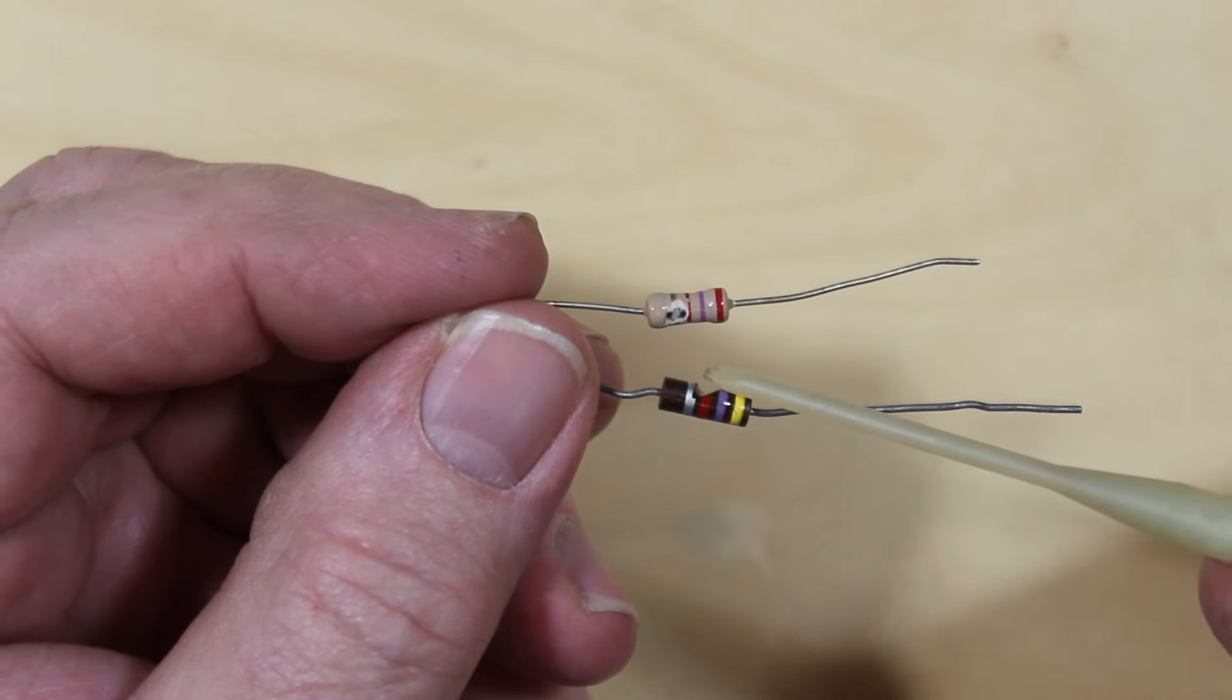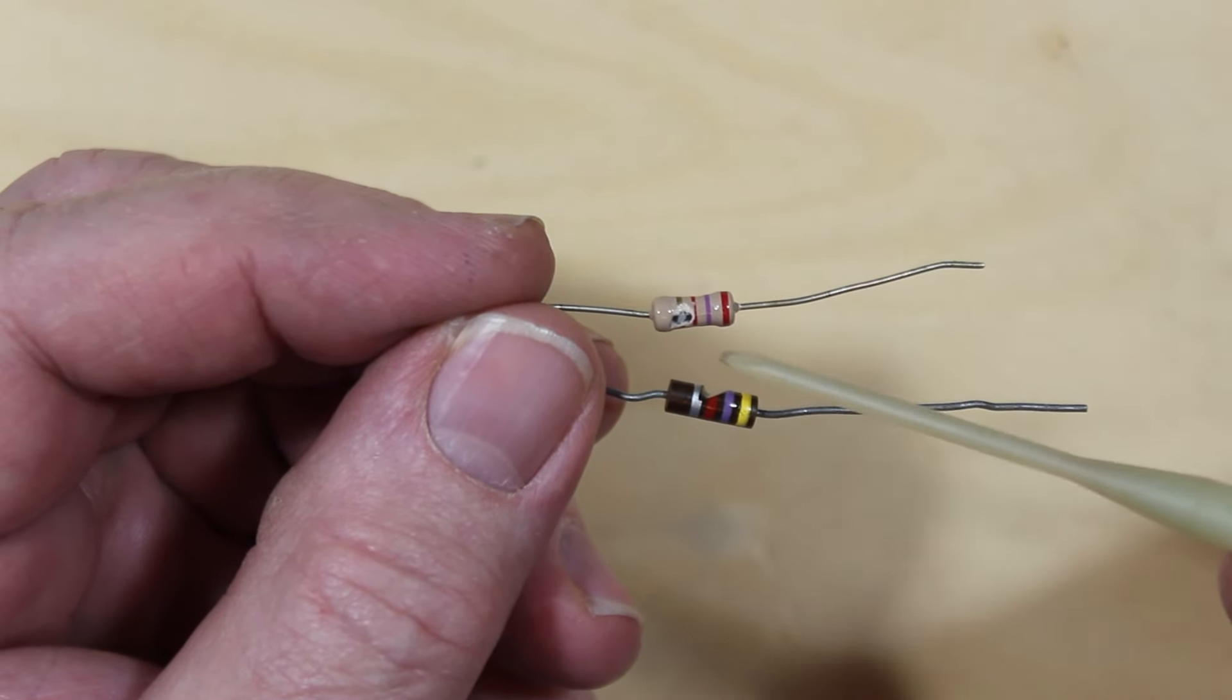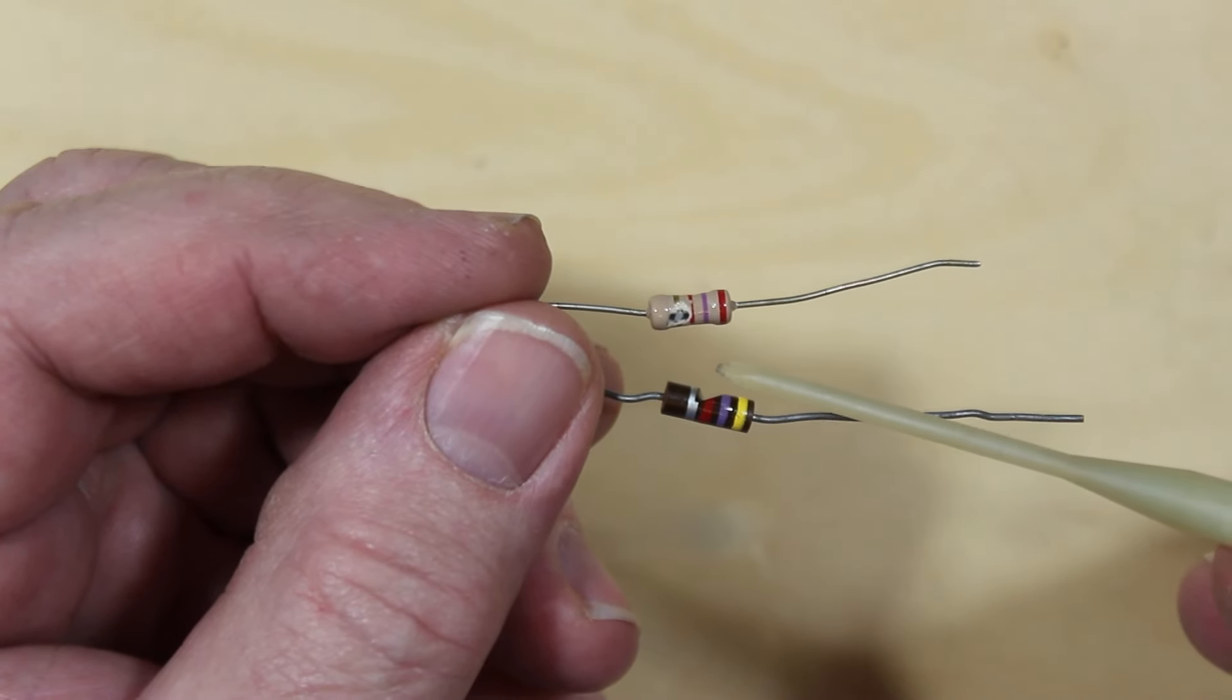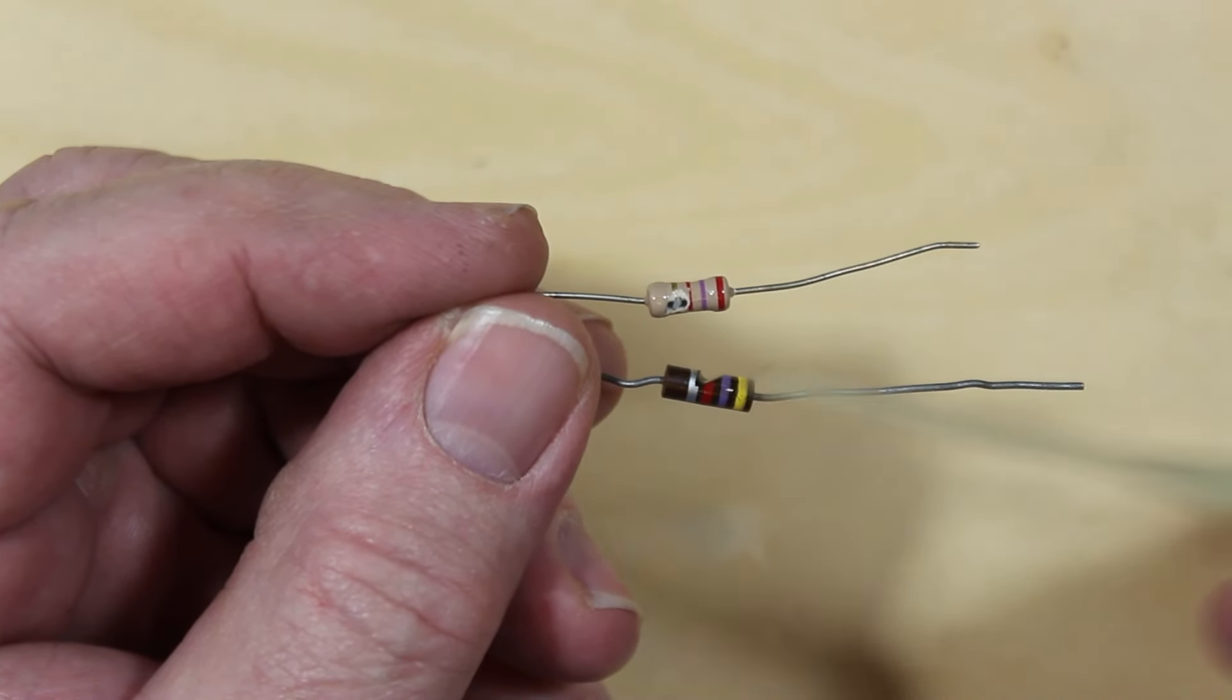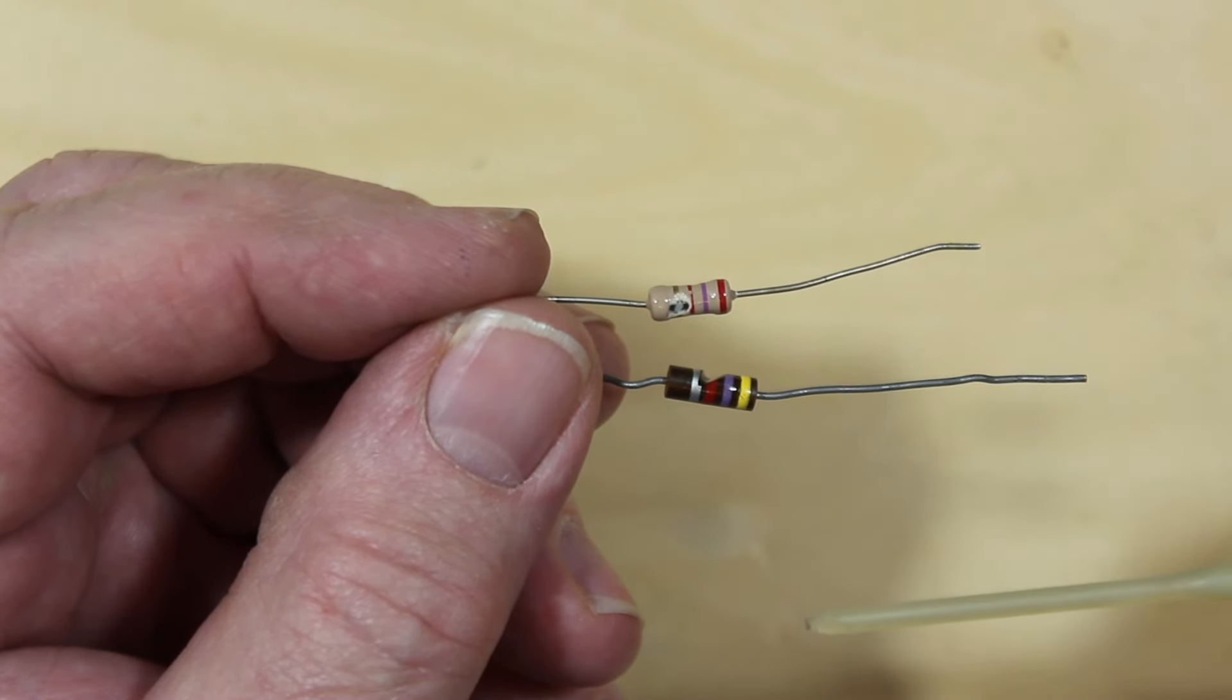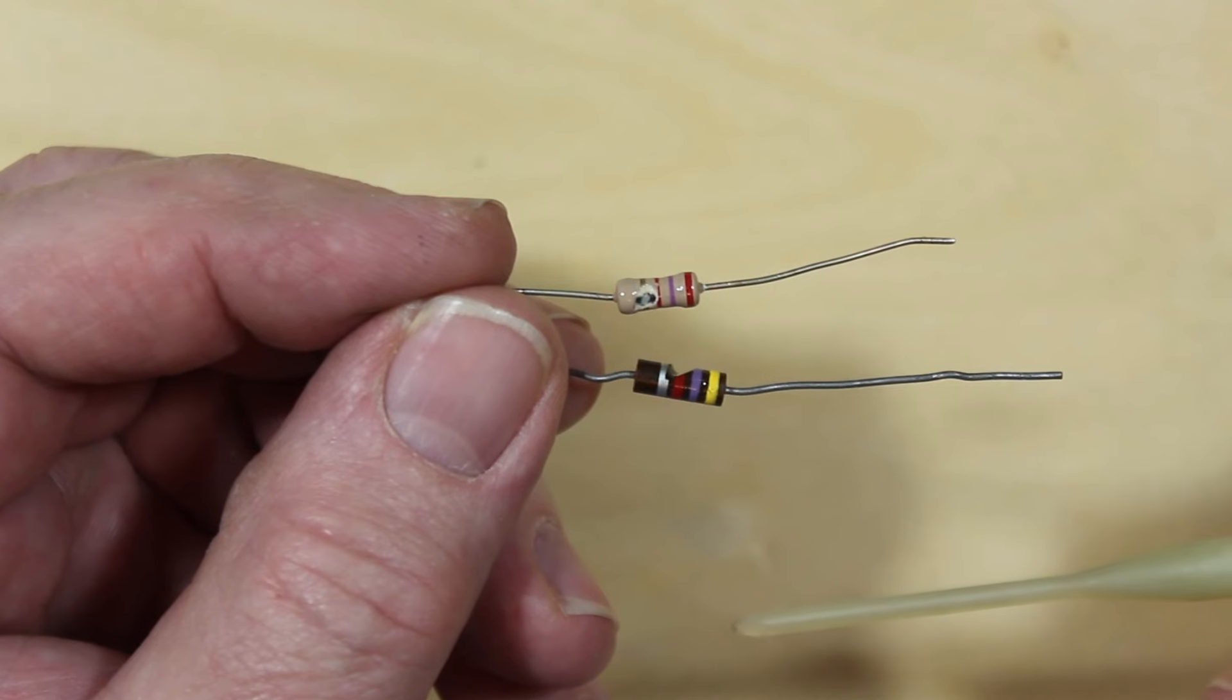We've removed a lot of material from this resistor. This was a half watt resistor. Well, they're both half watt resistors, but we've removed a lot of material from here. So you're going to have to derate these things by a fair bit, maybe a quarter watt in this one, but that's not really usually what you might use this for.